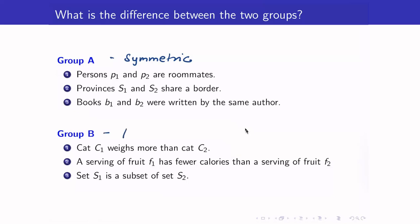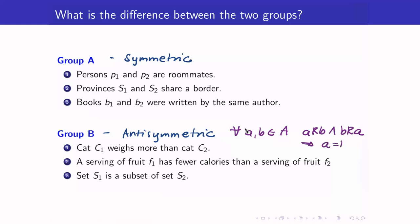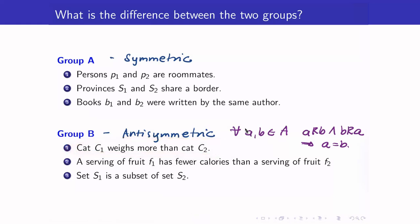Whereas for Group B, this is anti-symmetric. For a relation to be anti-symmetric means that for all A, B in your set A, if A is related to B and B is related to A, then the two elements must be equal. The subset relation is anti-symmetric because if S1 is a subset of S2 and S2 is a subset of S1, then the two sets must be equal.